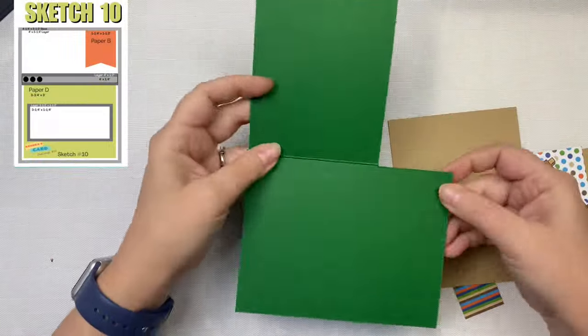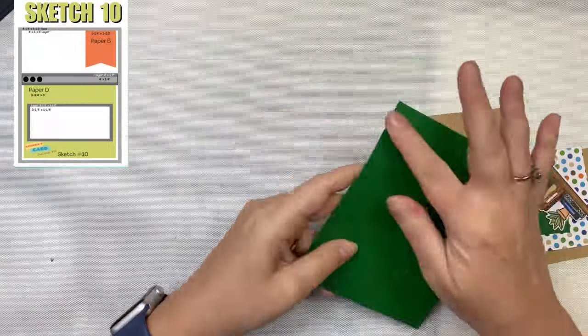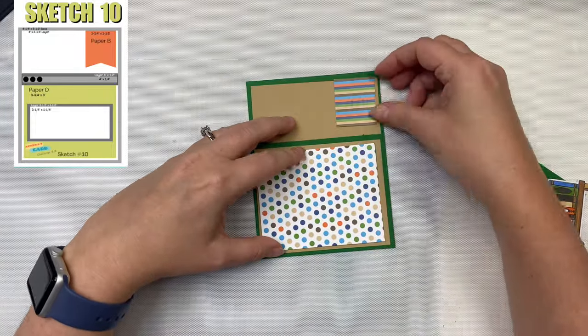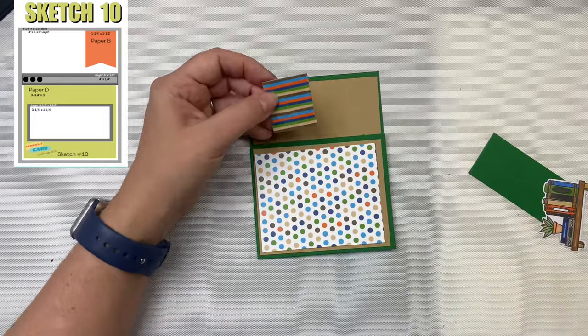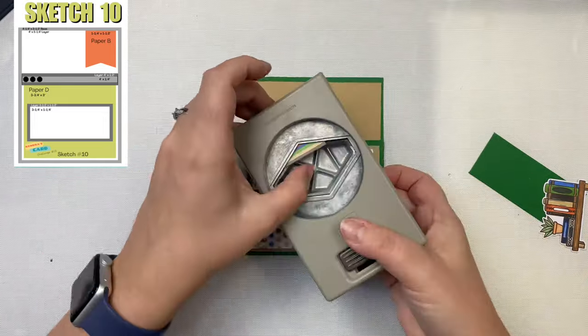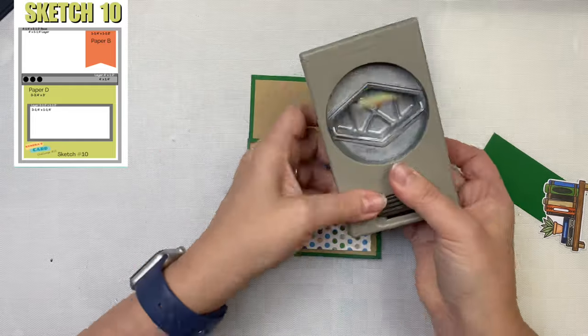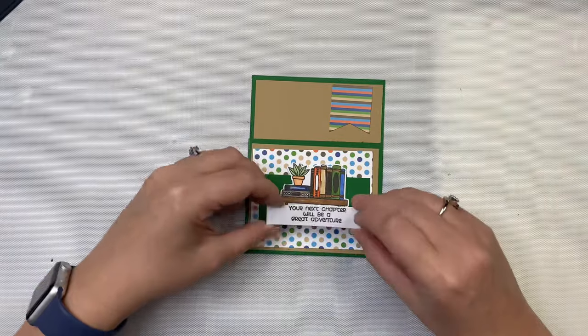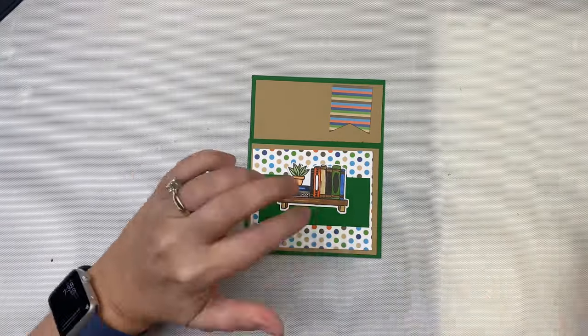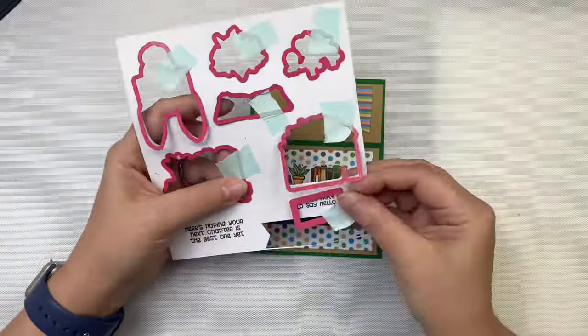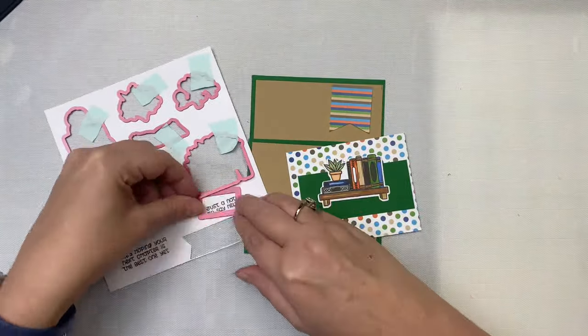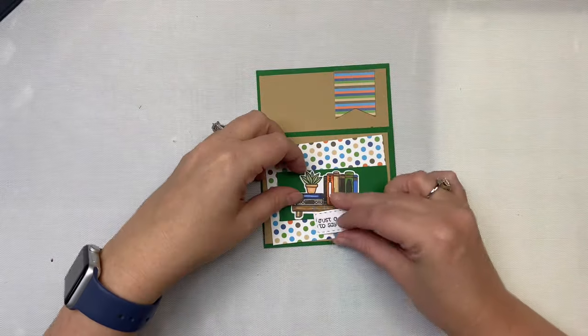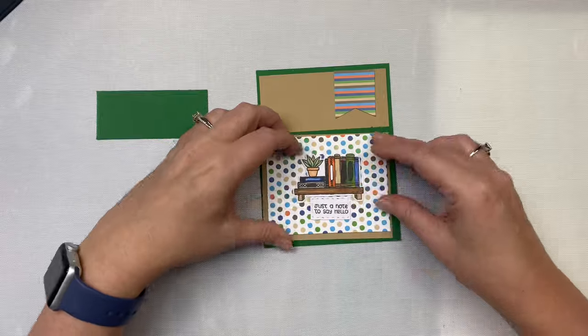For card three, I'm creating a barn door fold using sketch ten. For the card base, I took a half sheet of the on the green card stock that measures 5 and a half by 8 and a half, and I cut 2 inches off of one of the ends. The inside panel measures 4 by 5 and a quarter. I'm using the same brownstone color on the front as well, and that piece measures 4 by 3 and a quarter so that it can be a layer for that 3 and three-quarter by 3 inch polka dot pattern paper piece.